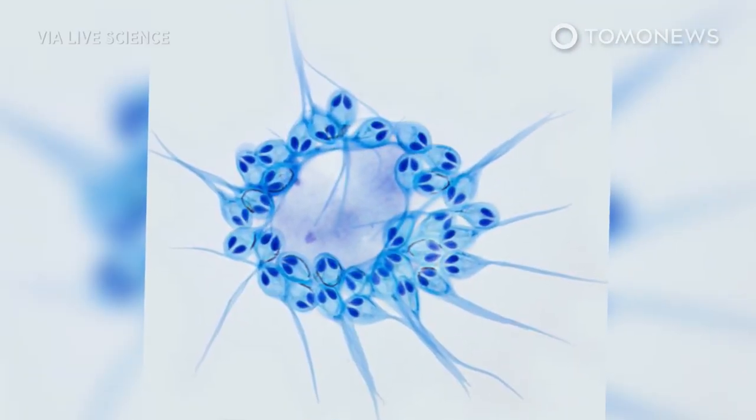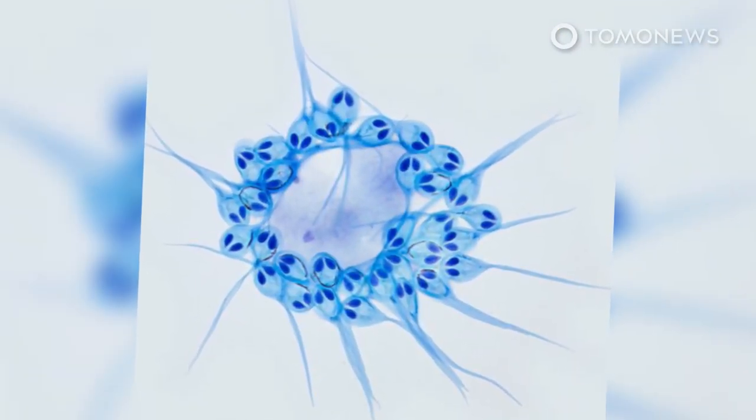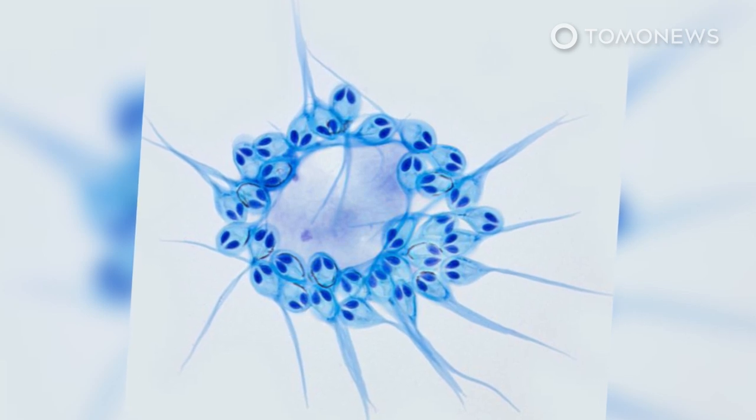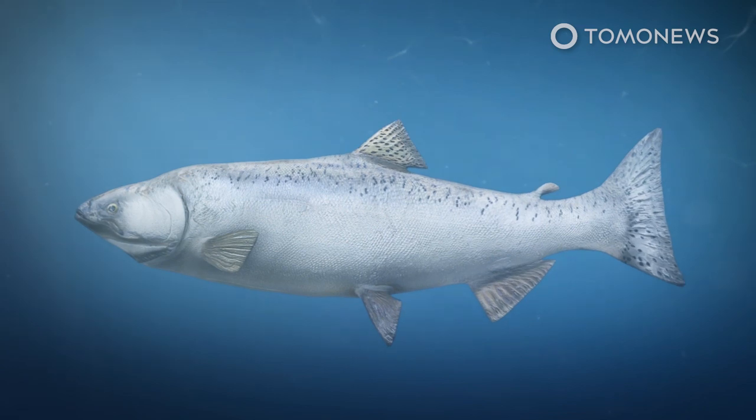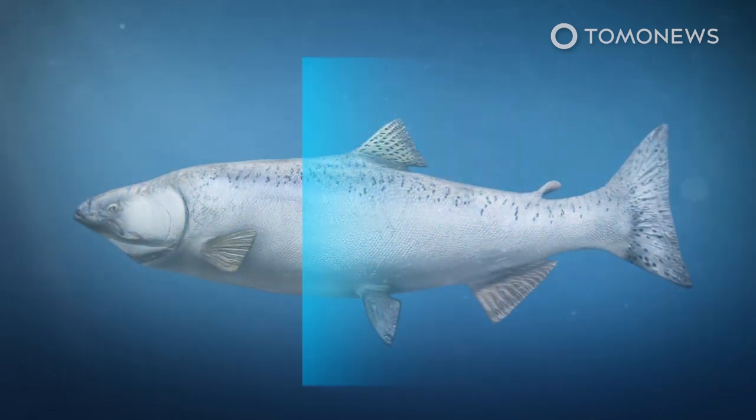This bizarre creature is the only multi-cell animal species scientists know of that does not breathe. The Heneguya salminicola is a species of parasitic blob that lives inside and feeds on the flesh of fish.